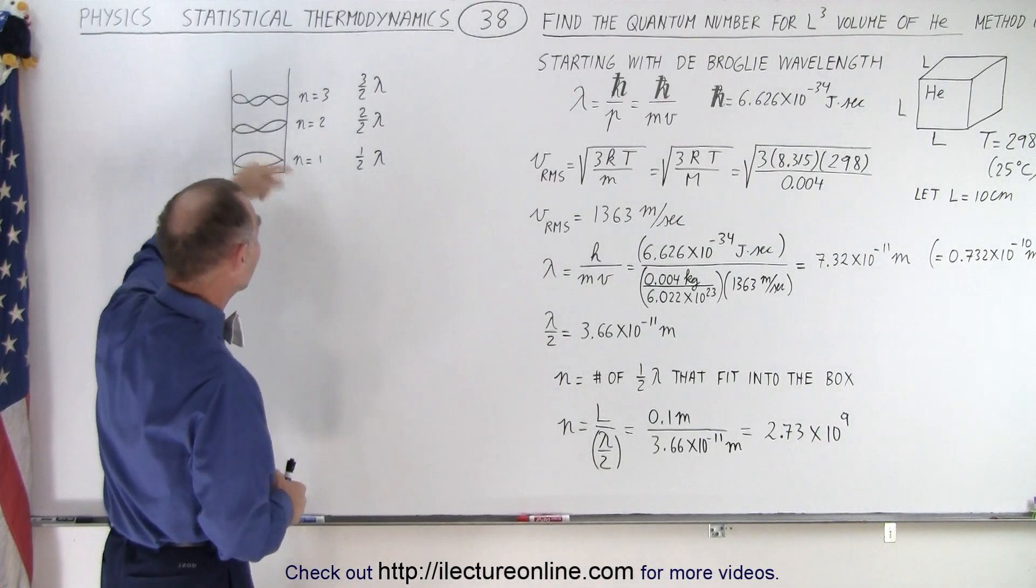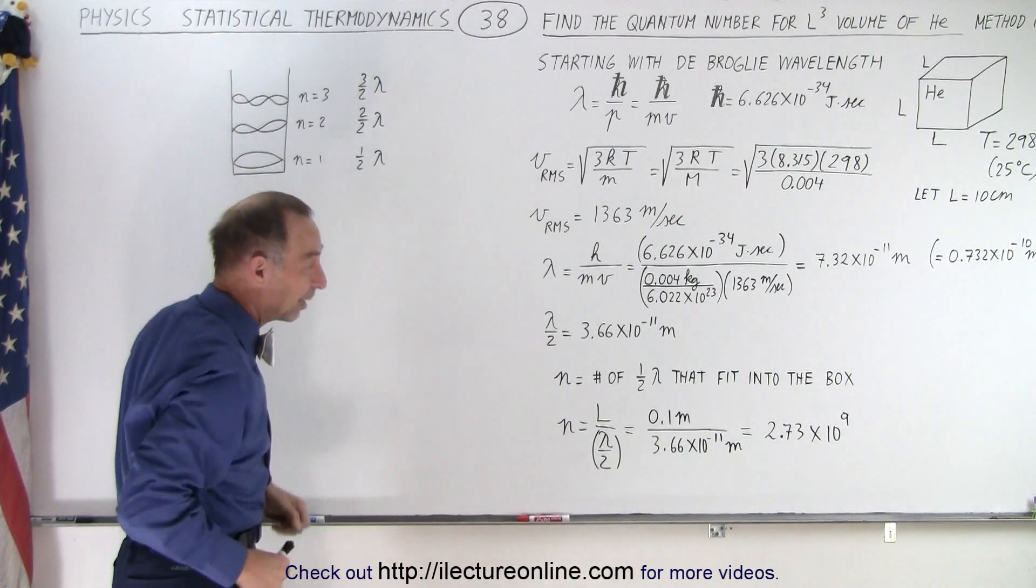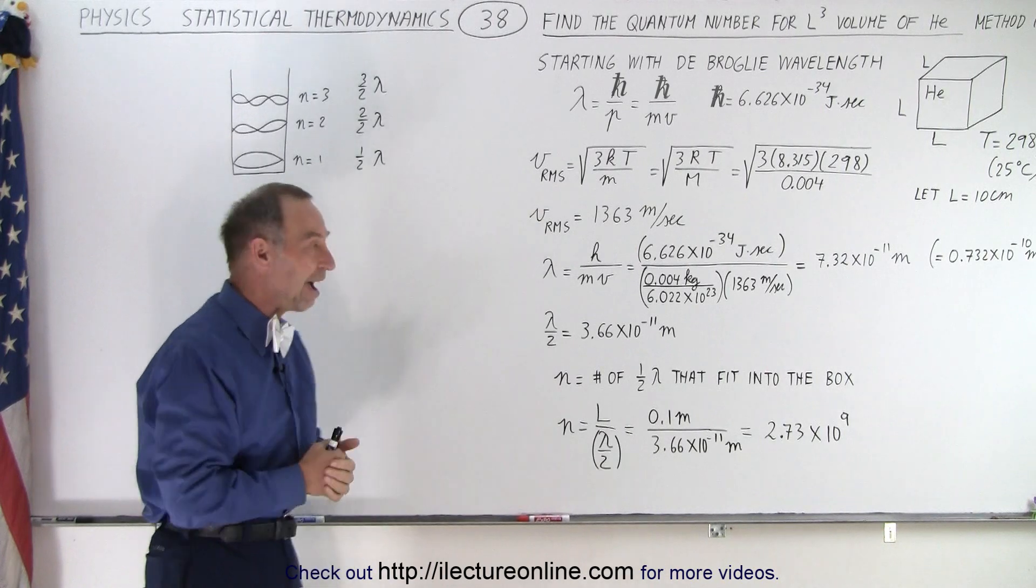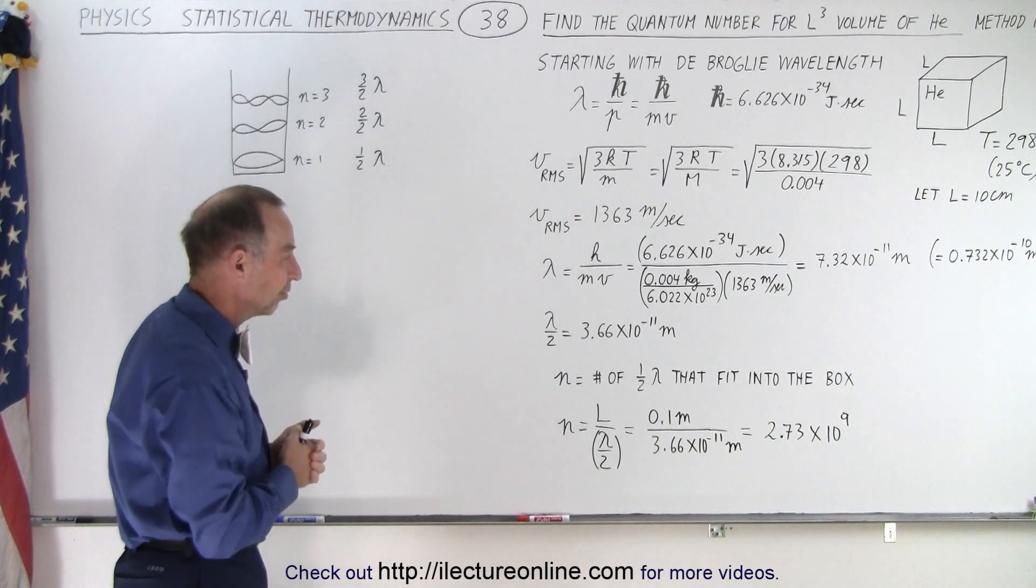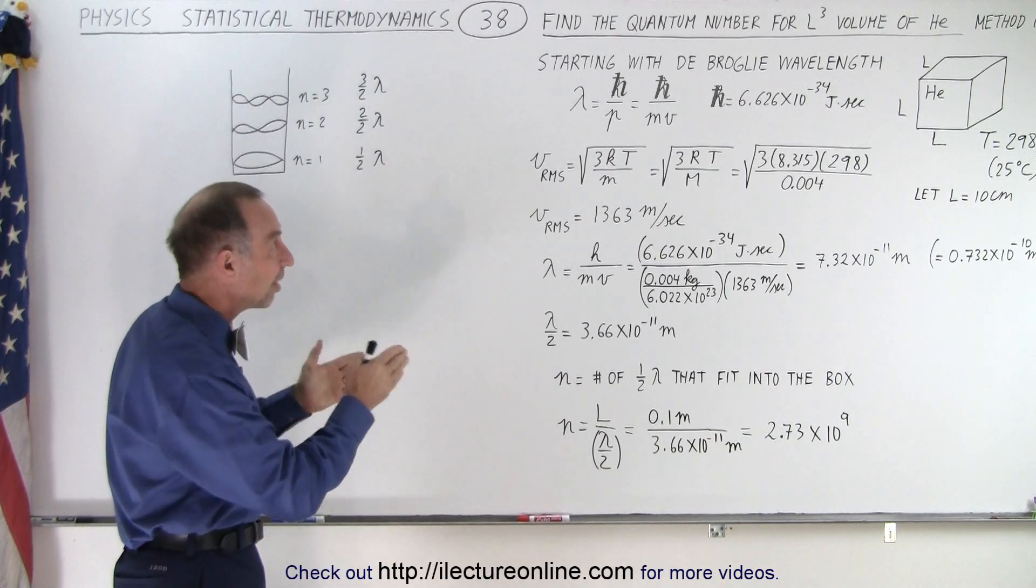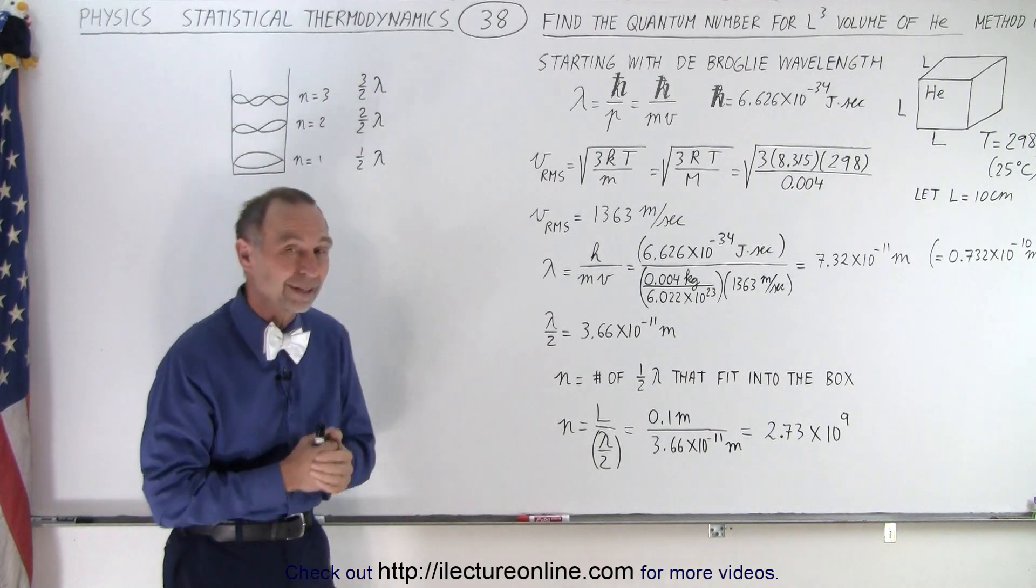So if we just continue upwards, then n would eventually turn into that number, if we have enough half wavelengths for the distance of the length of the box. So that's how we determine the quantum number in that situation.